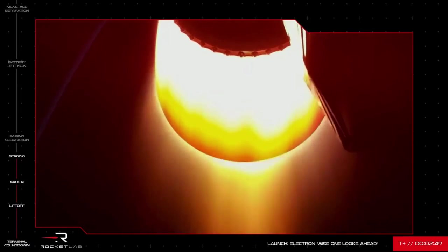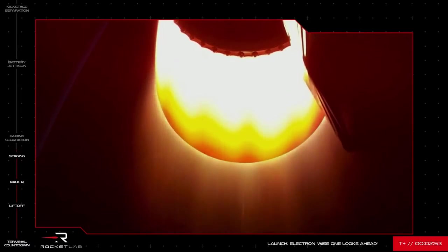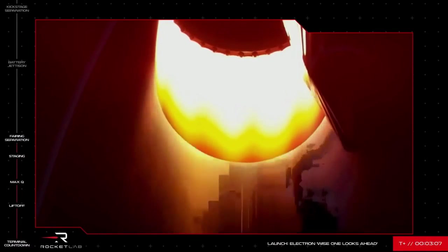You can see on your screen that Electron's first and second stages have successfully separated. The single space-optimized Rutherford engine on Electron's second stage is glowing red as the nozzle radiates heat from the exhaust. Because the vehicle has now cleared the majority of Earth's atmosphere, we can get rid of the payload fairing to shed some extra weight. We should see that on our screens shortly.